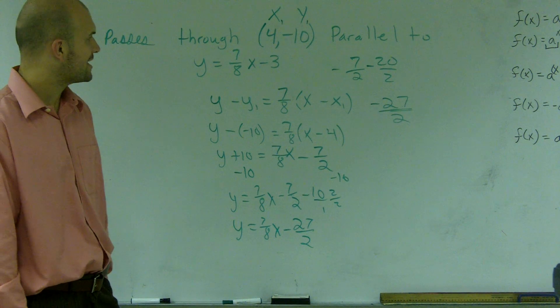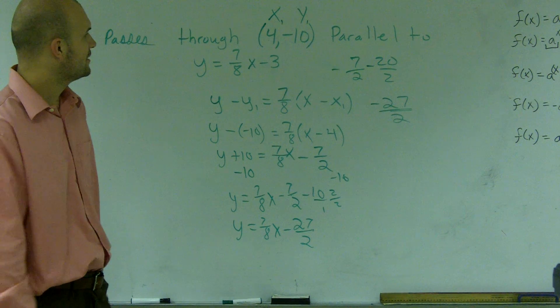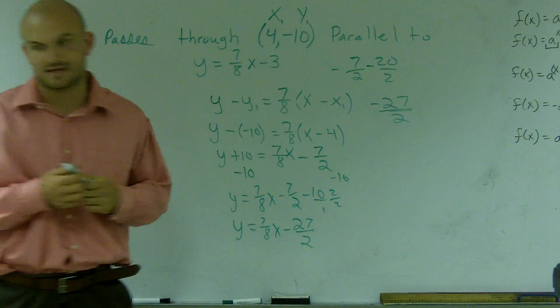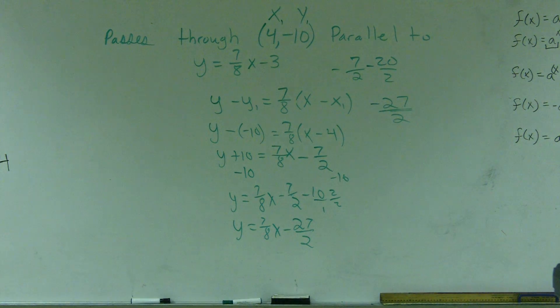And that is how you find a line parallel to this line going through the point (4, -10). There we go.